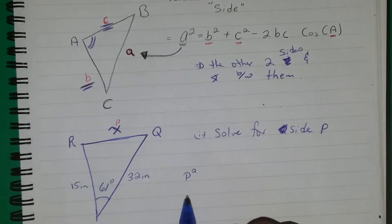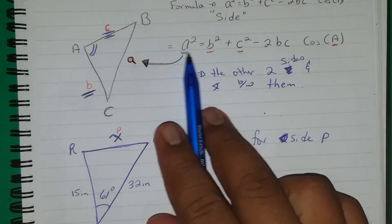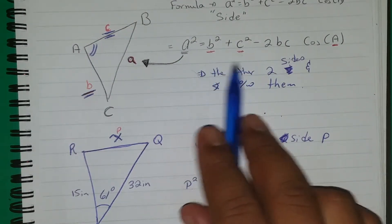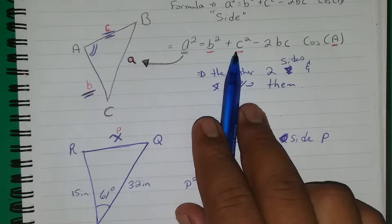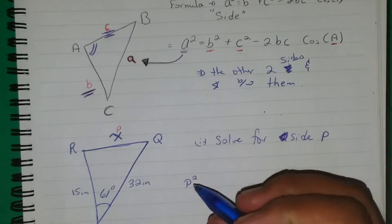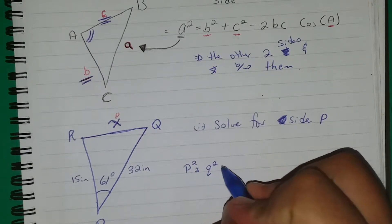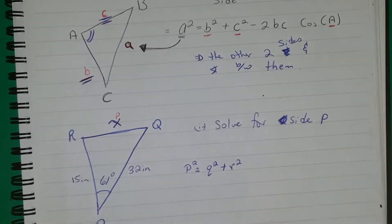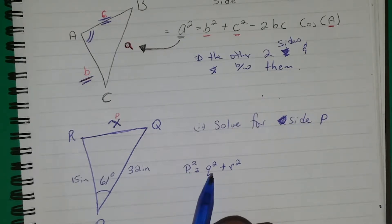Since we're solving for P, we start our formula with P squared. Once we've identified that we're solving for P, the remaining two sides are Q and R. So we write: P squared equals Q squared plus R squared, because the other two sides are Q and R.